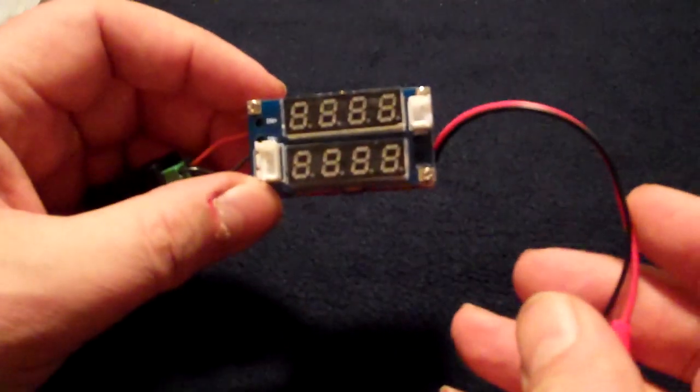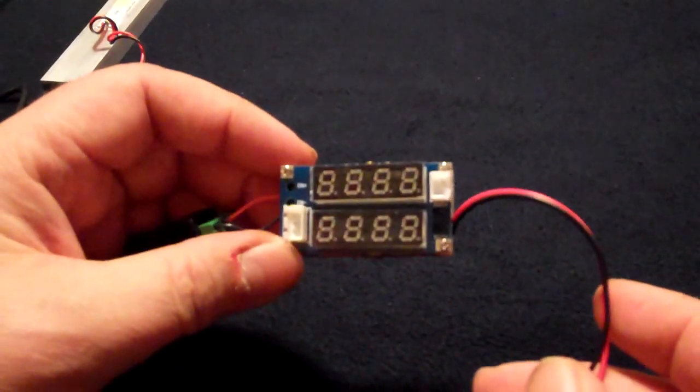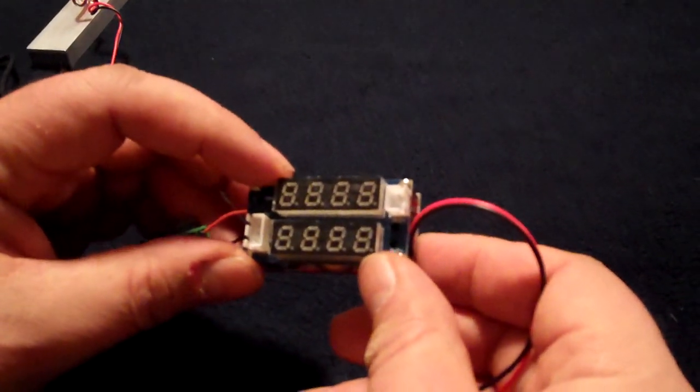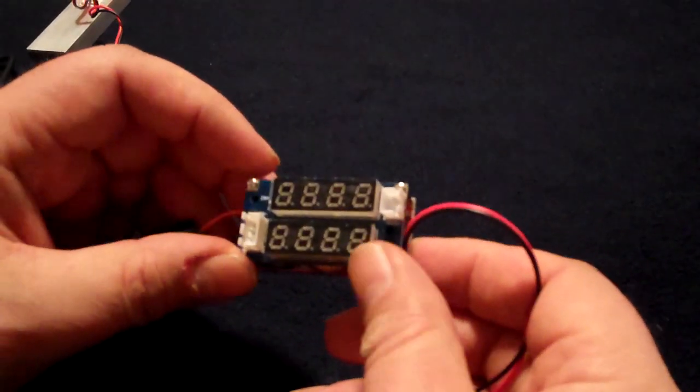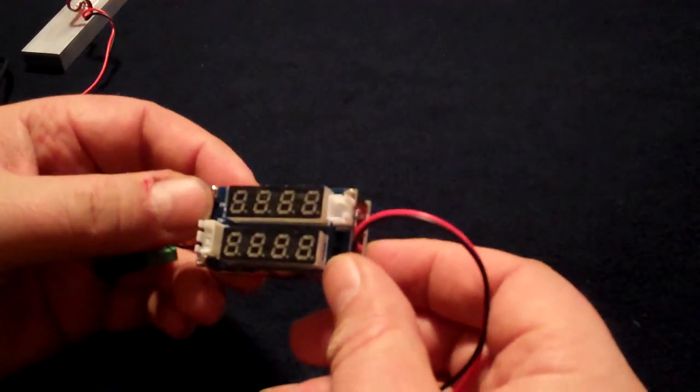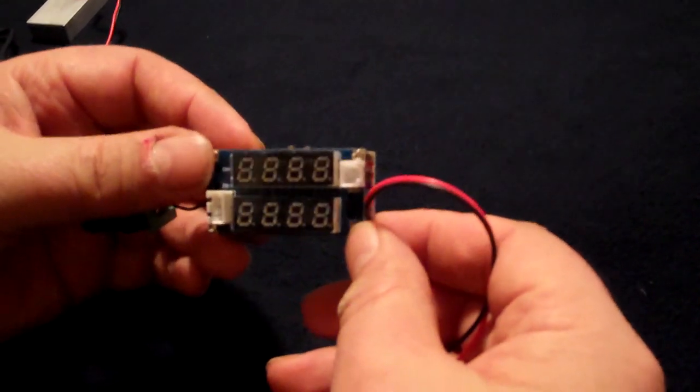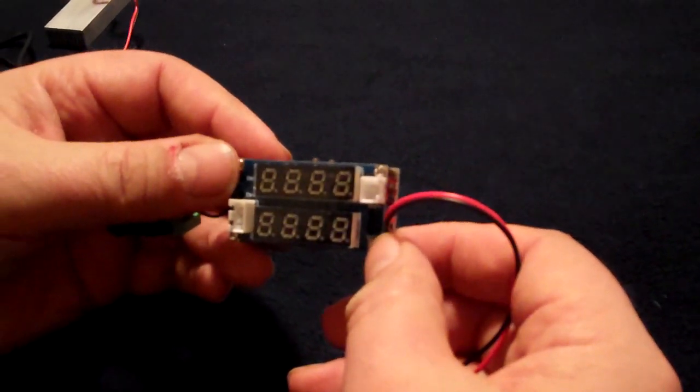This item I have in my hand is a switching regulator. You can pick these on eBay for about anywhere from $10 to $15 shipped. What it has is two displays. The top display will show you your voltage and the bottom display shows the current. This particular regulator is a constant current constant voltage, which means you can set up the current to a maximum and it won't go beyond that, as well as the voltage.